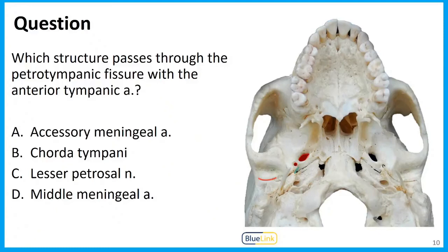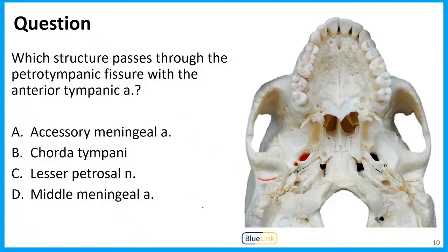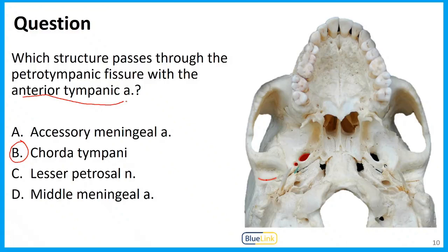Question: Which structure passes through the petrotympanic fissure with the anterior tympanic artery? Is it the accessory meningeal artery, the chorda tympani, the lesser petrosal nerve, or the middle meningeal artery? The correct answer is B, the chorda tympani. The chorda tympani exits the temporal bone through the petrotympanic fissure to enter the infratemporal fossa, while the anterior tympanic artery — a branch of the first part of the maxillary artery — enters the middle ear through that same fissure. They travel in opposite directions through the same space.